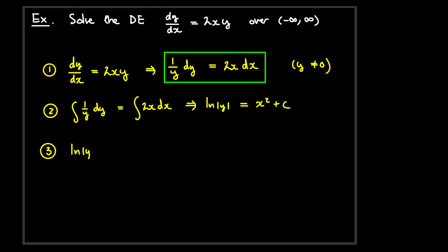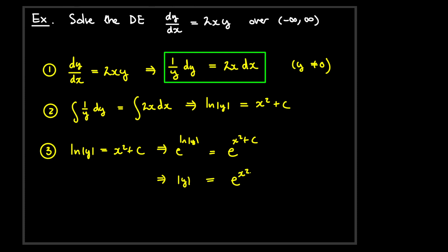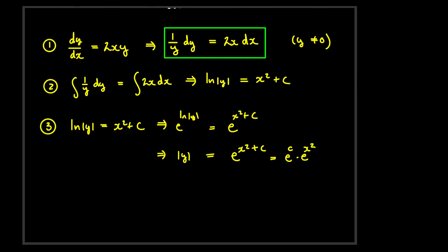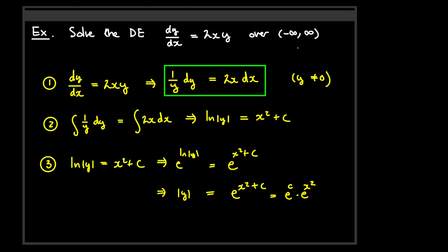So if ln|y| = x² + c, we raise e to both sides: e^(ln|y|) = e^(x² + c). The left side simplifies to |y|, and we can write the right side as e^c times e^(x²). So |y| = e^c · e^(x²).